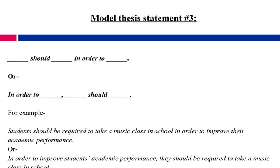Last but not least, here's a third way to model it: blank should blank in order to blank, or you can rearrange it — in order to blank, blank should blank. For example, students should be required to take a music class in school in order to improve their academic performance. You can also flip it around: in order to improve students' academic performance, they should be required to take a music class in school. That last portion — they should be required — is your assertion.